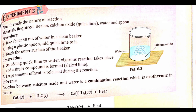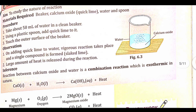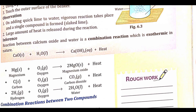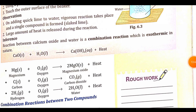Experiment 3 — aim: to study the nature of the reaction between calcium oxide and water. Materials: beaker, calcium oxide (quick lime), water, spoon. Procedure: take 50 ml water in a clean beaker and using a plastic spoon add quick lime to it. Observation: vigorous reaction takes place, a single compound (slaked lime) is formed, and a large amount of heat is released. Inference: the reaction between calcium oxide and water is a combination reaction.